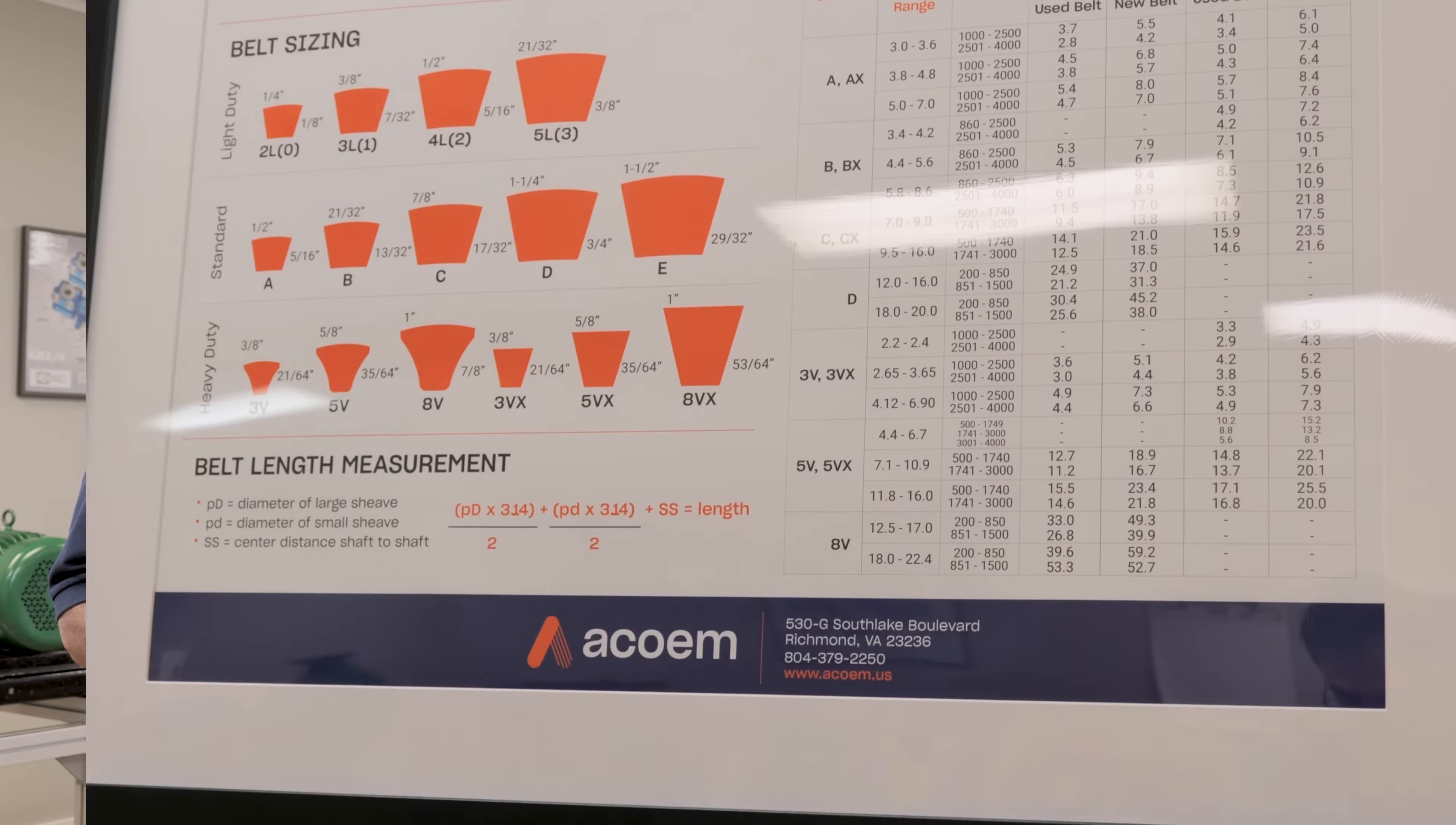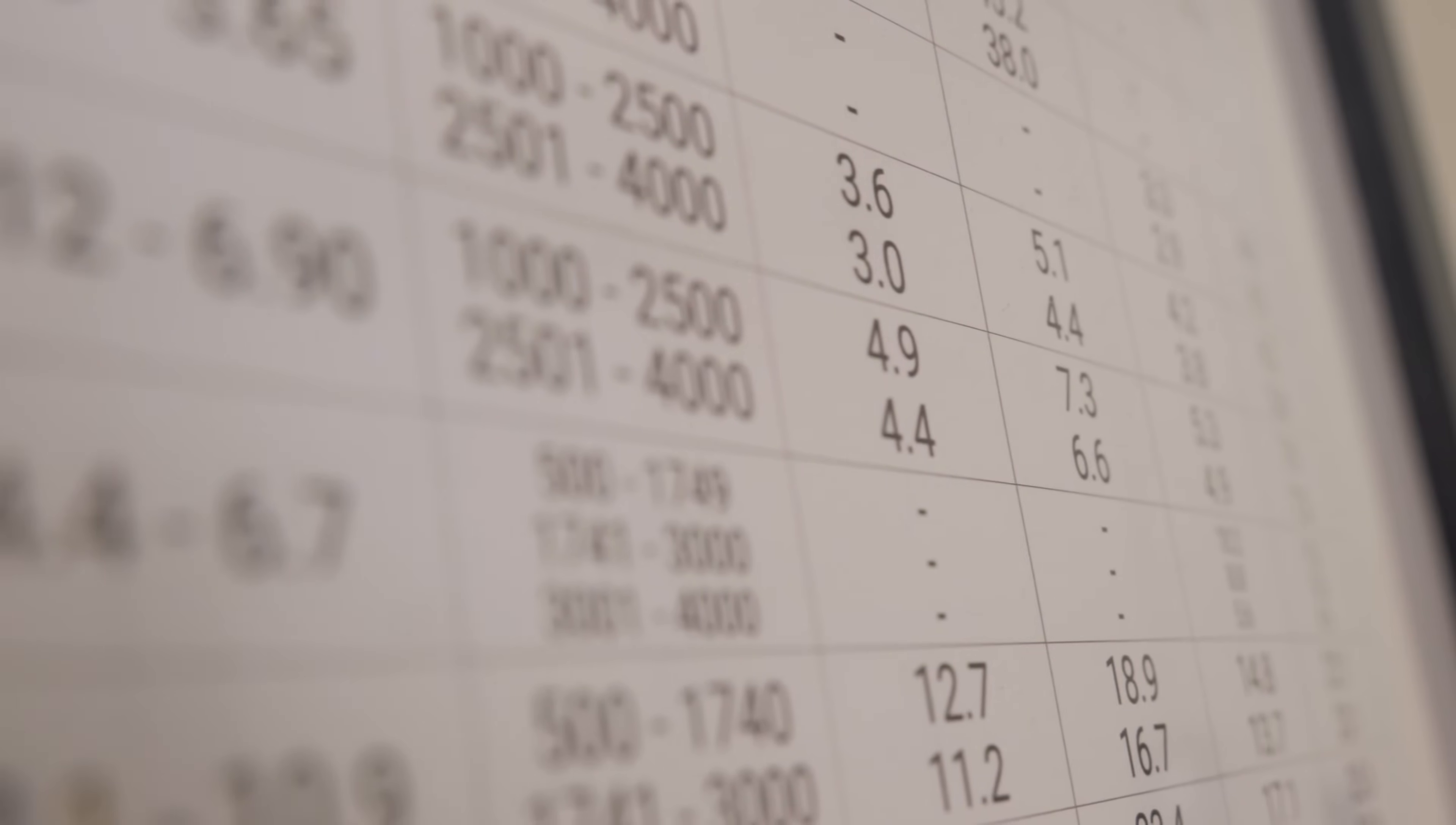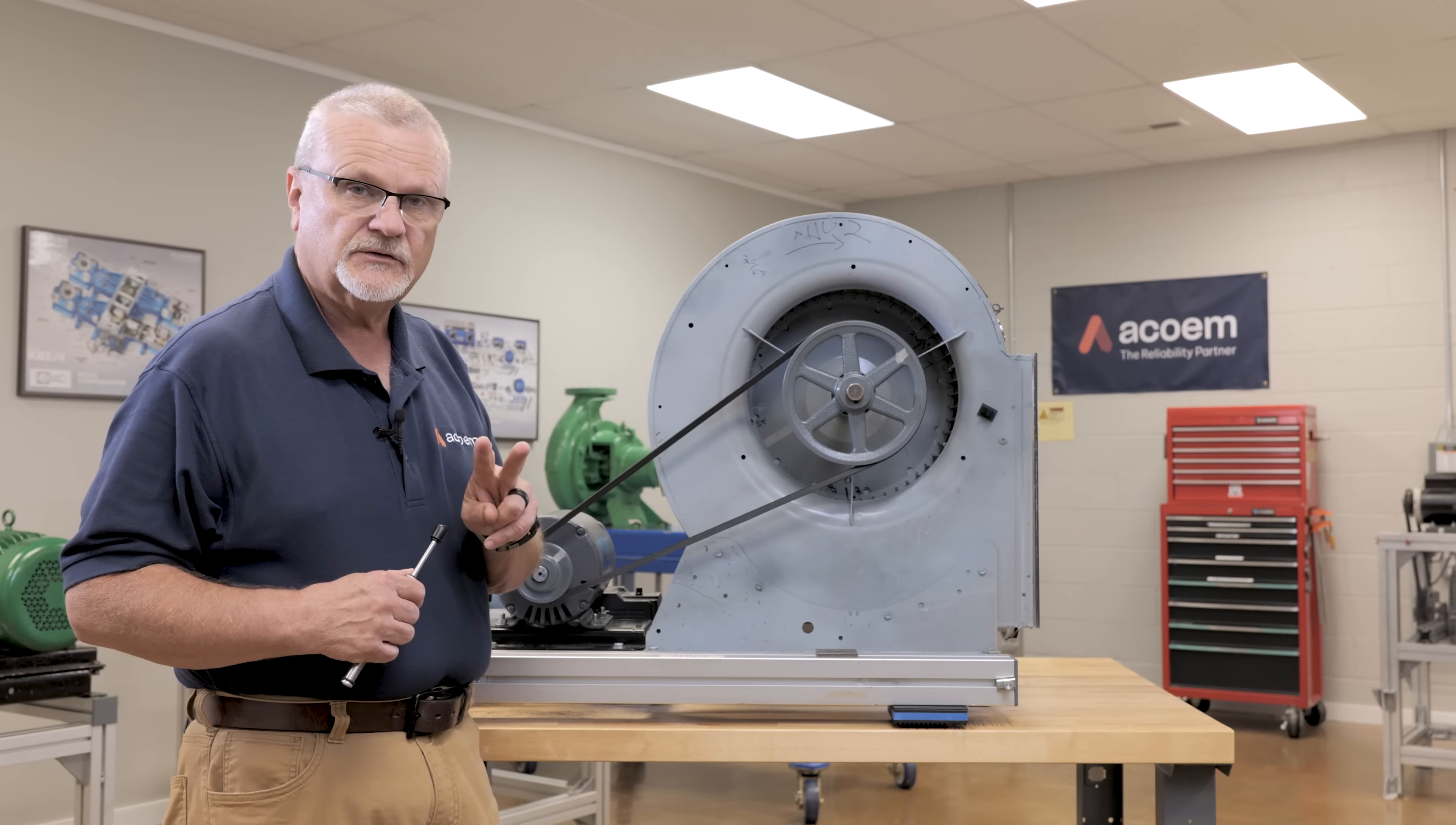Now there are a lot of ways you can find that information. Usually your belt tensioning gauge comes with a table. Based on the size of the belt and the horsepower, you can calculate how much deflection you have. I use an app called Browning Toolbox Technician. It's a free download that you can use. You can find charts and tables online, but basically you have two things you need to set.